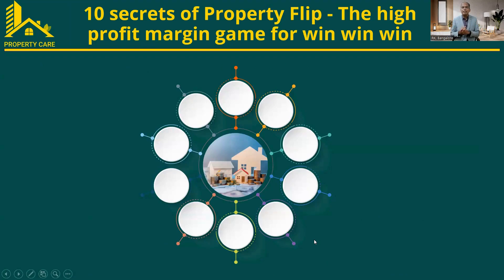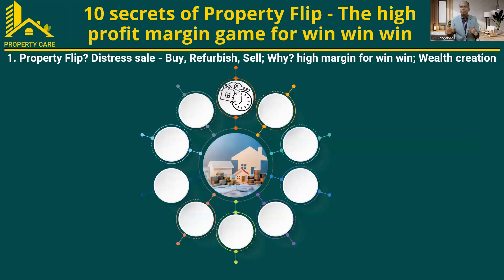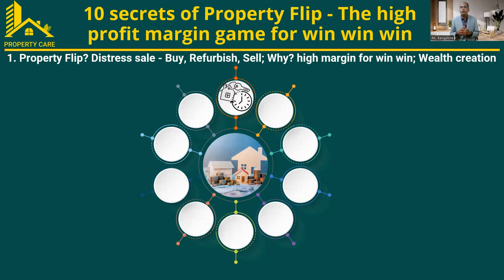So what are the 10 secrets of property flipping? The first one is basically a distress sale — mainly for people who want to sell their property quickly. For example, one person comes to me wanting to leave abroad in a month or two months' time. They are currently owning a property in Bangalore and want to sell it. They are even ready to go below the market price — they want to get rid of the property and travel abroad.